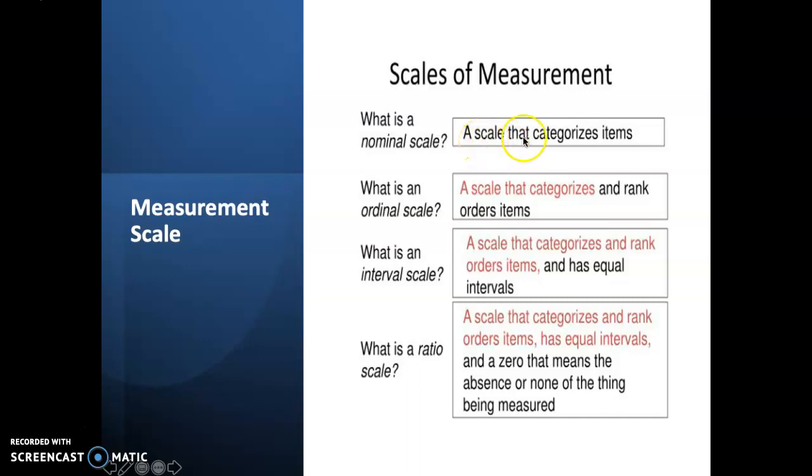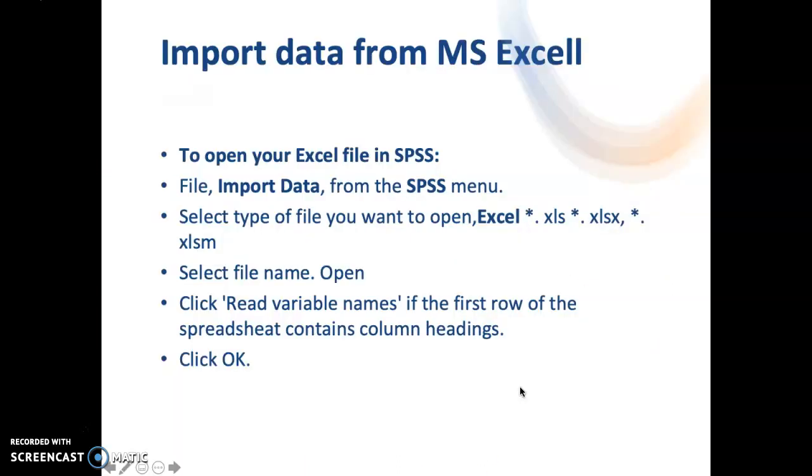We have nominal, which is categorized item. Ordinal, a scale that categorizes and ranks order item. Interval, a scale that categorizes and ranks order item and has equal interval. And ratio scale, a scale that categorizes and ranks order item which has equal interval and a zero, that means the absence or none of the thing being measured.